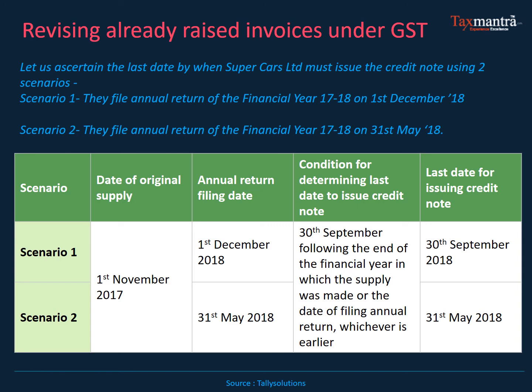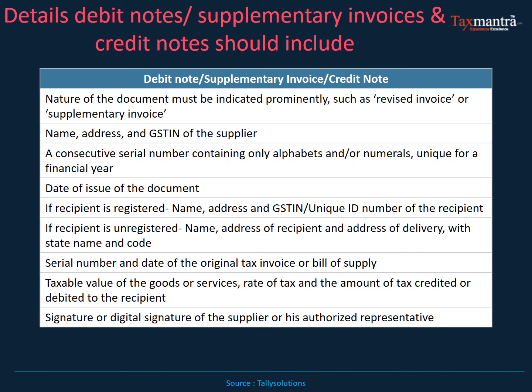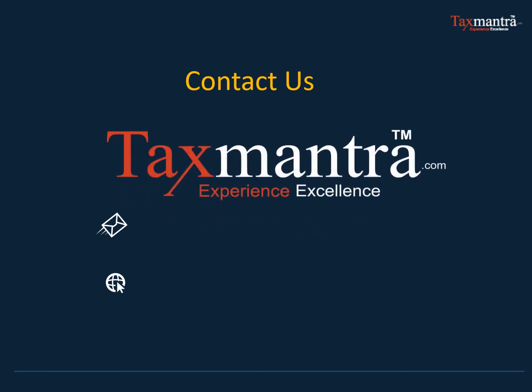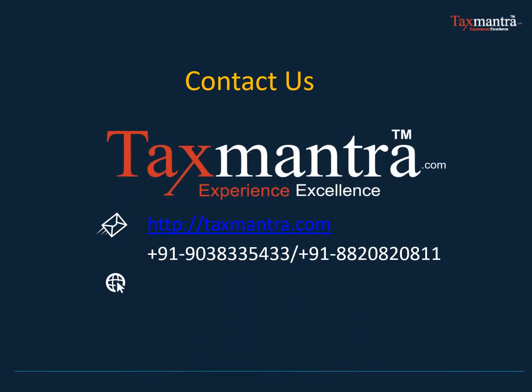What details need to be included in the debit or credit note? The name of the document must be indicated prominently, along with the name, address, and GSTN number, a consecutive serial number, date of issue, and if the recipient is registered, their serial number and taxable value. A signature or digital signature as required must also be included. Thank you for watching this video — we will come up with more videos. If you have any queries, write to us or call us.